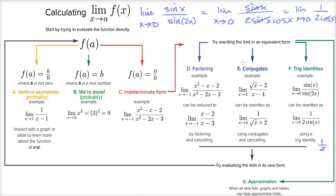In general, if none of these techniques work, you'll encounter a few other techniques further on once you learn more calculus. As a last resort, there's approximation. You can do it numerically — try values really, really close to the number you're approaching. If you're finding the limit as x approaches zero, try 0.00000001 and negative 0.00000001. If you're finding the limit as x approaches four, try 4.00001 and 3.999999999 and see what happens. But that's kind of the last ditch effort.